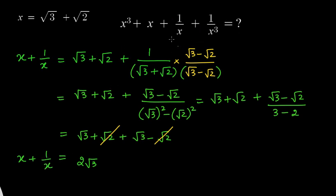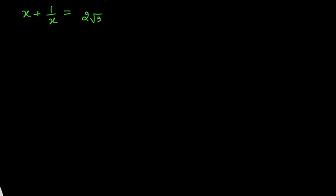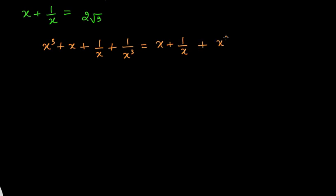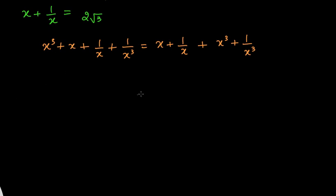Now let us look at the full expression x cubed plus x plus 1 by x plus 1 by x cubed. I want to group x plus 1 by x together, and then the remaining terms x cubed plus 1 by x cubed together. I know the value of x plus 1 by x. Now I need to find x cubed plus 1 by x cubed by expressing it in terms of x plus 1 by x, and we will use the cubic identity to do this.